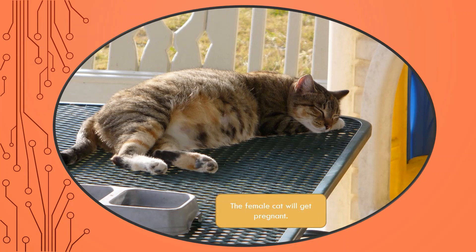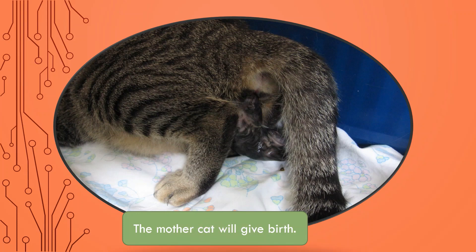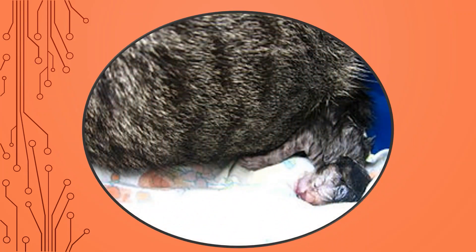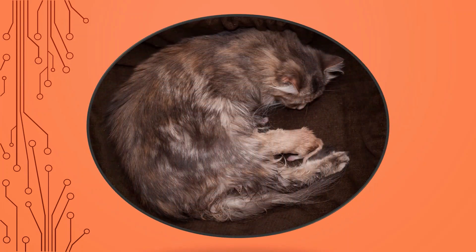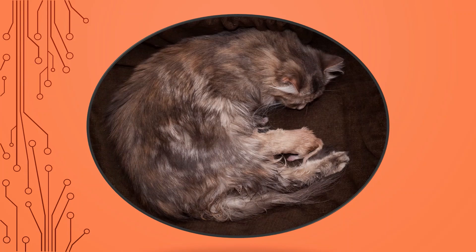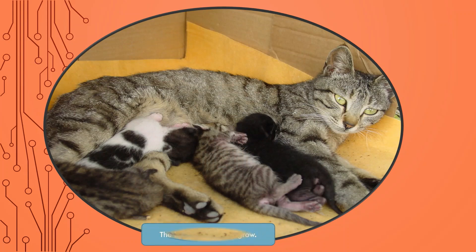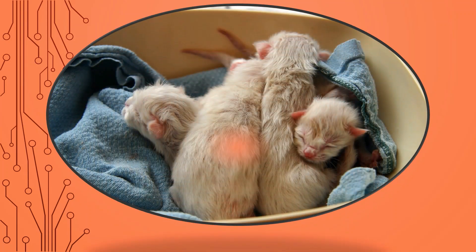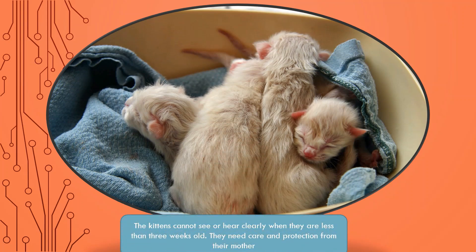The female cat will get pregnant and the female cat will give birth. This is what you call the newly born kittens. The newly born kittens will slowly grow every day. But take note, the kittens cannot see or hear clearly when they are less than 3 weeks old. They need parent protection from their mother.